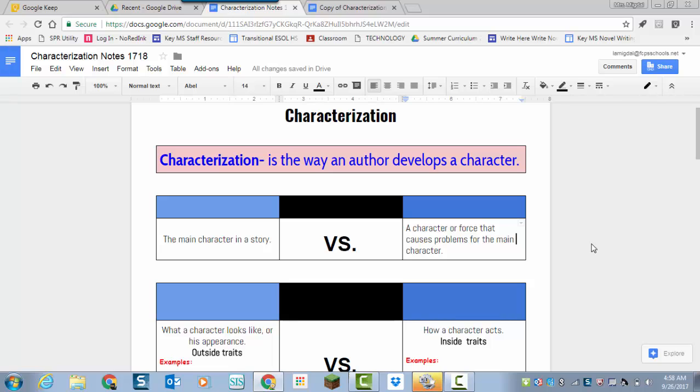Characters. In any story, there are really two types of characters. We have the main character, and we call that character the protagonist. And then there's usually another character, and usually it's a character, but sometimes it's a thing or a force. But it's the character or force that causes the problem for the main character. And we call that the antagonist. So we have the protagonist and the antagonist in any story.